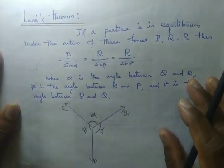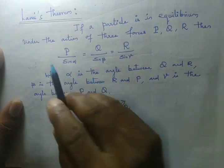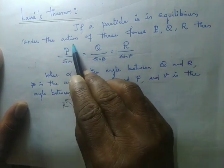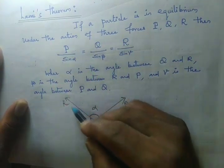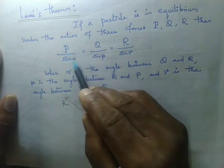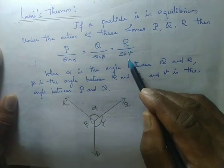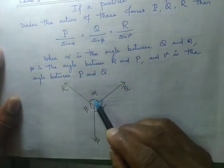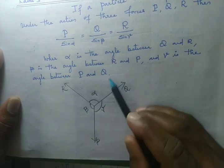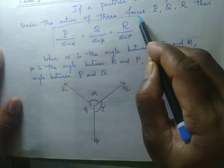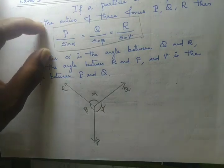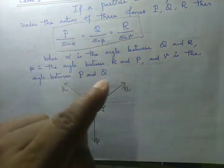Lami's theorem — this is used to solve problems. If a particle is in equilibrium under the action of three forces P, Q, and R, then: P/sinα = Q/sinβ = R/sinγ, where α is the angle between Q and R, β is the angle between R and P, and γ is the angle between P and Q. That is Lami's theorem.